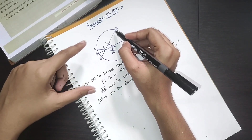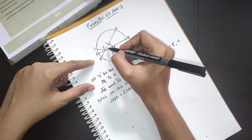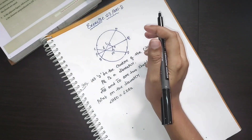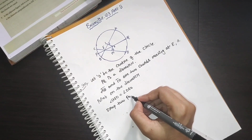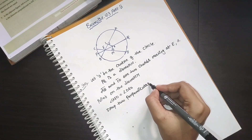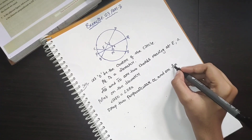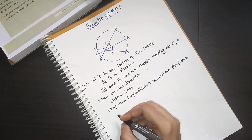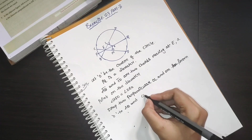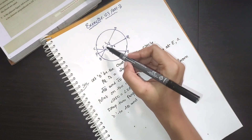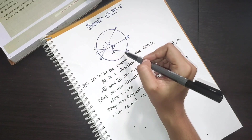Given: angle AEO equals angle DEO. Drop two perpendiculars OL and OM from O to AB and CD respectively.